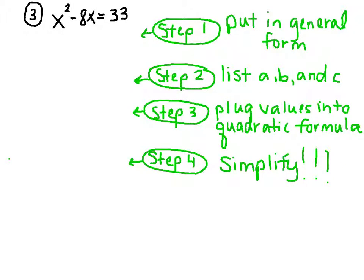Let's do number 3. So step 1 says we need to put it in general form, so we need to set it equal to 0.